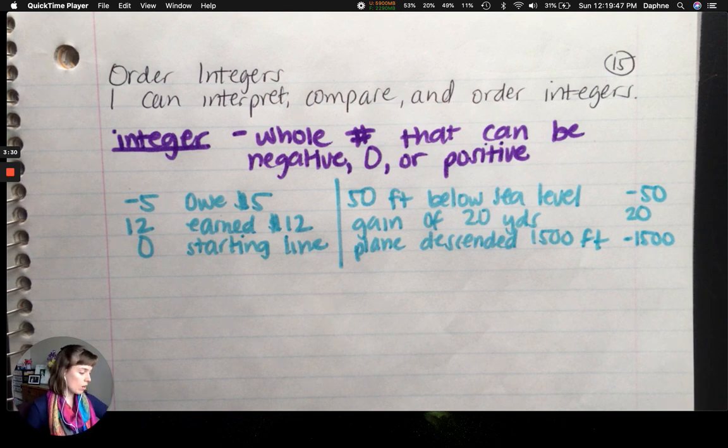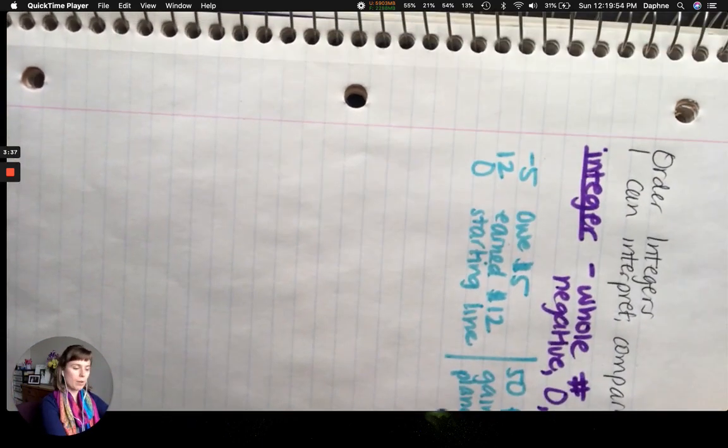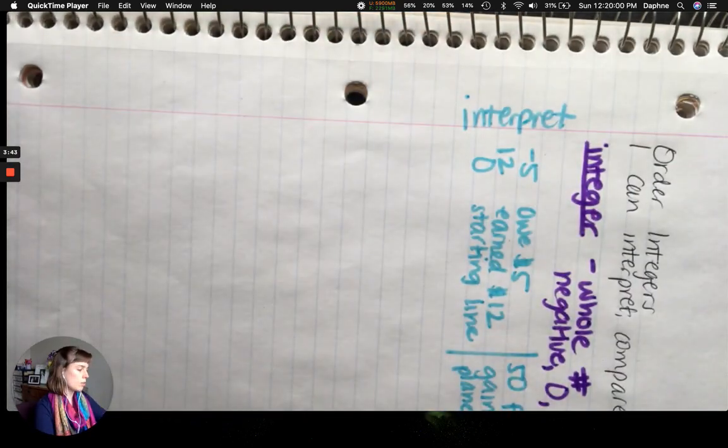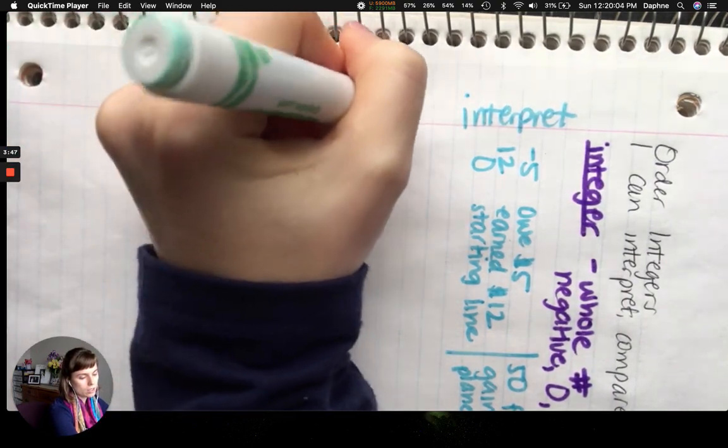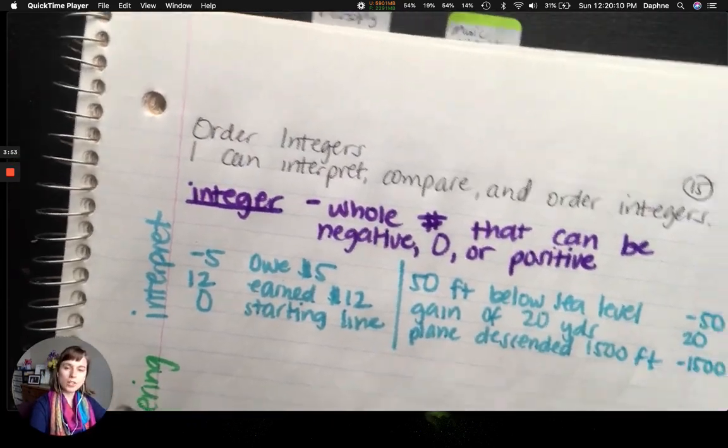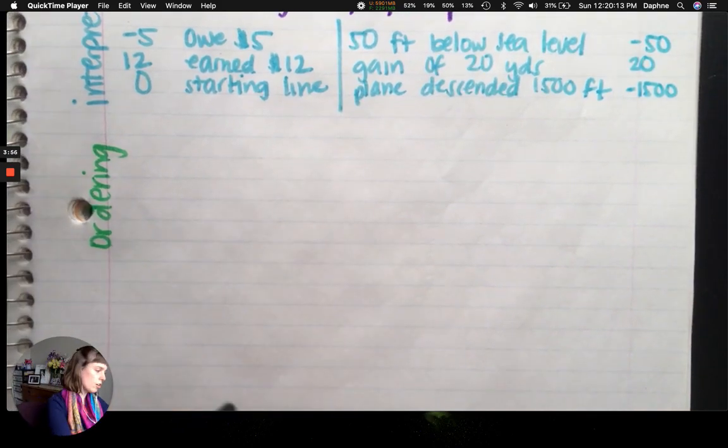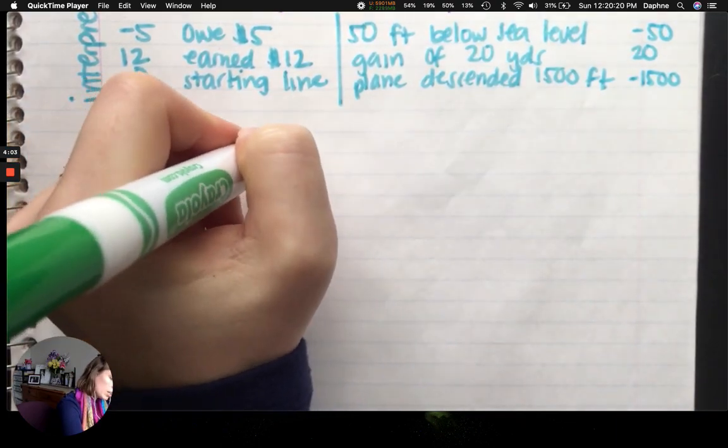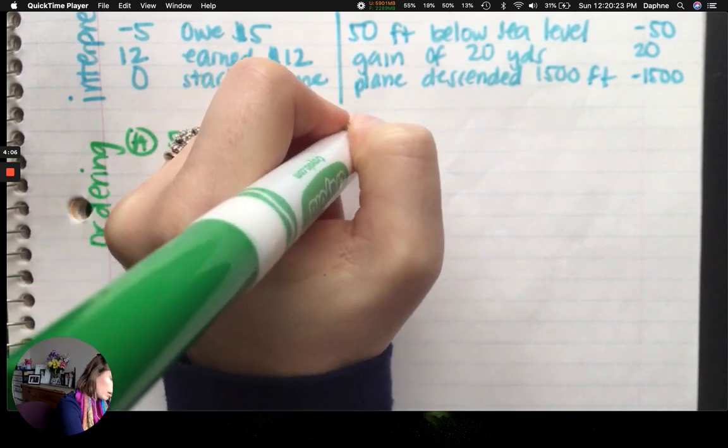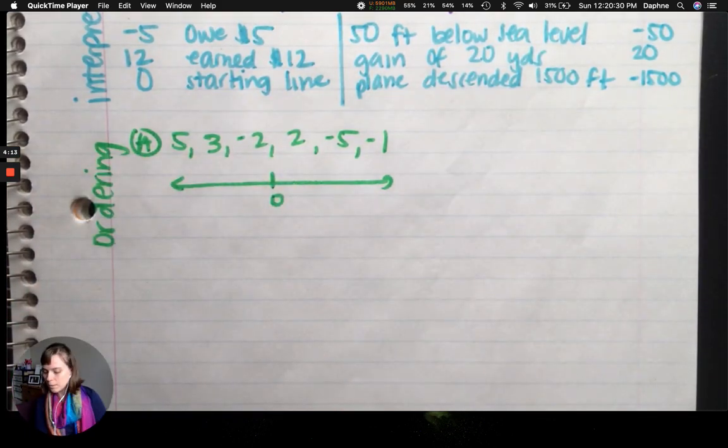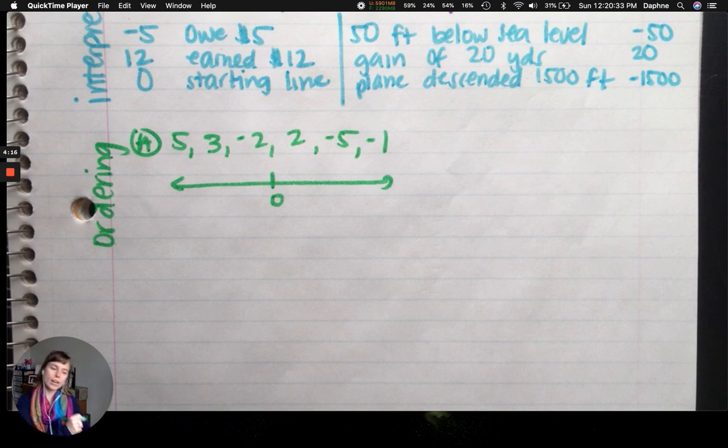All right, so that's interpreting. Now let's do some ordering. I should label this as interpret. Our next section we're going to label is ordering. So we're going to have two examples. I'll do the first one, and then I want you to do the second one on your own. So our first example uses the numbers five, three, negative two, two, negative five, negative one. And we're going to draw a number line underneath this and put zero in the middle. So zero is in the middle because on the left-hand side we have all of our negatives. On the right-hand side we have all of our positives.